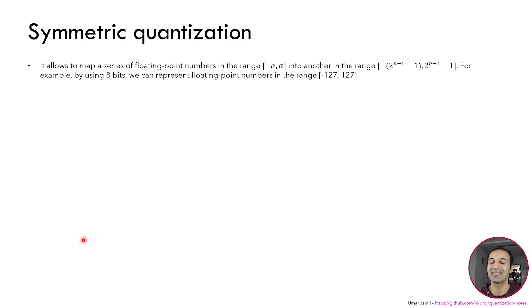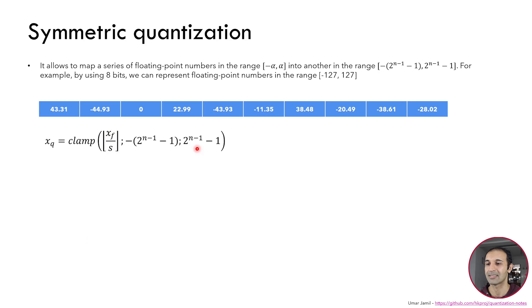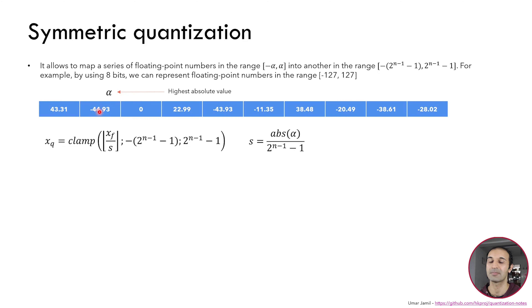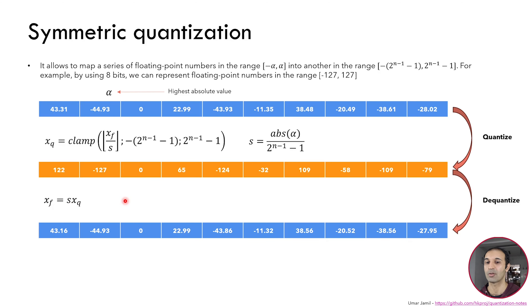Let's see symmetric quantization. With symmetric quantization we aim to transform a symmetric input range into a symmetric output range. Each number is computed as: the floating point number divided by a scale parameter s, clamped between the limits determined by n, the number of bits. The scale s is calculated as the absolute value of alpha, where alpha is the biggest number in absolute terms — in this case minus 44.93, since in absolute value it's the biggest. After quantization we notice that zero is mapped into zero, which is very useful. To dequantize, we take the quantized number and multiply it by the scale s to obtain the original vector.